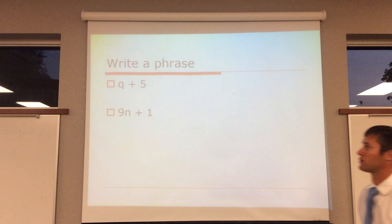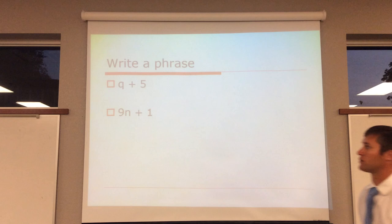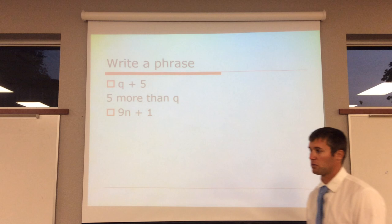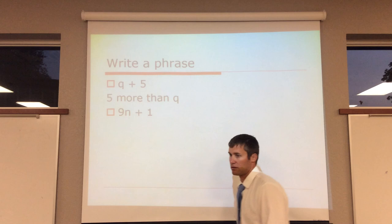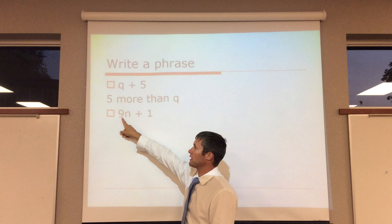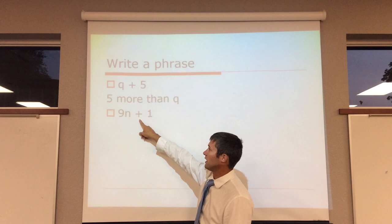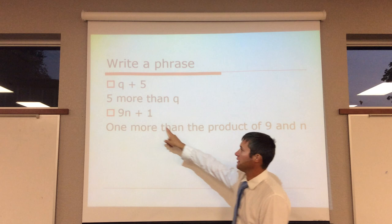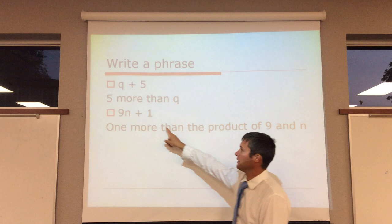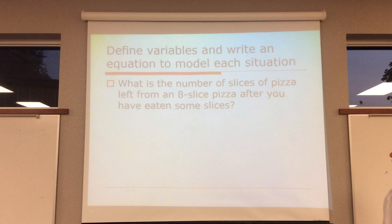Now, we want to write a phrase. We want to write this out. So, we could say q plus 5 and it's addition. What could we say? Increase by, sum of. I write five more than q. You could switch the order and you could say q more than five. But here, what does it mean? What operation is happening between nine and n? It's multiplying. So, you could go nine times n. And now, we have addition. So, we could say plus one. You could say one more than. So, we have one more. Then, the product. Product means multiplication of 9 and n.